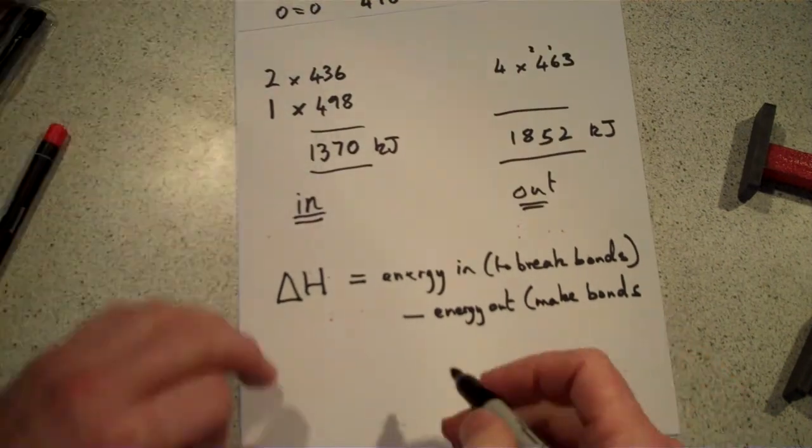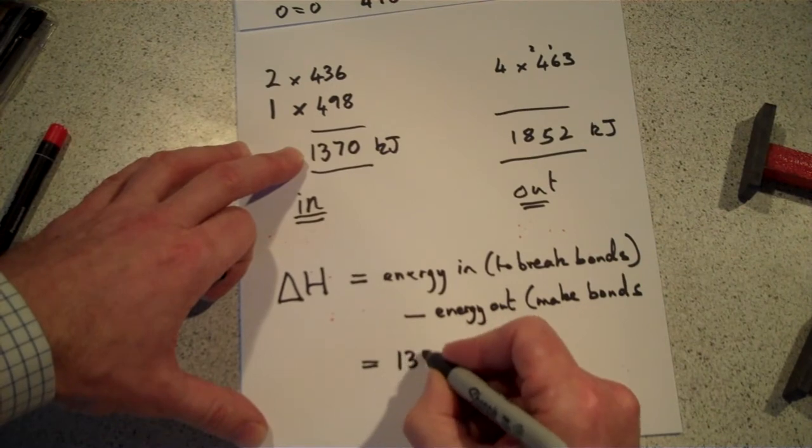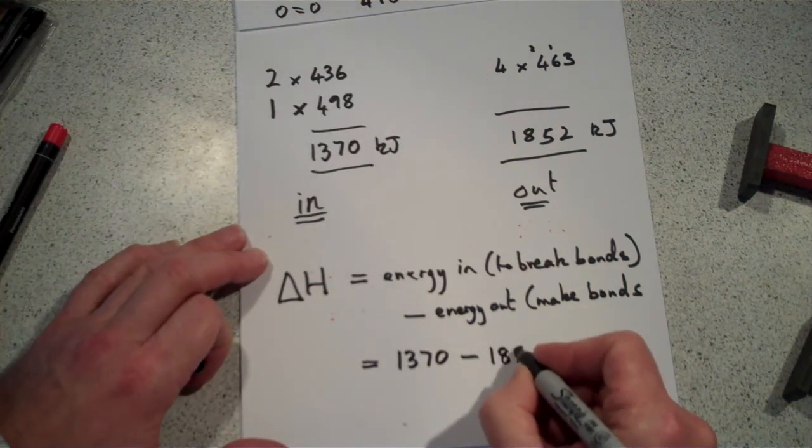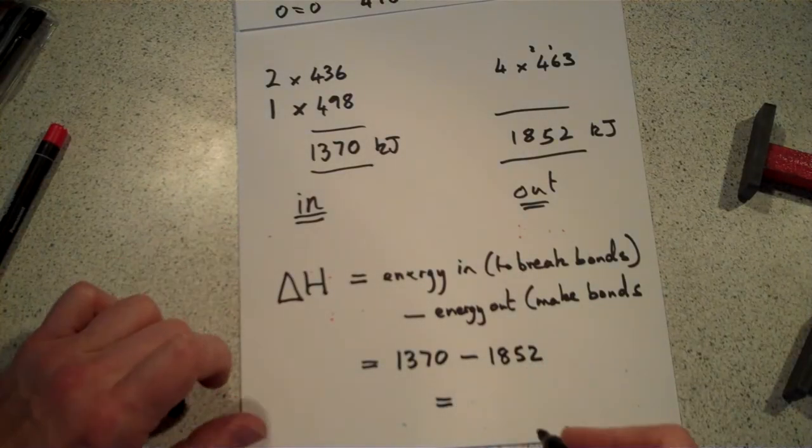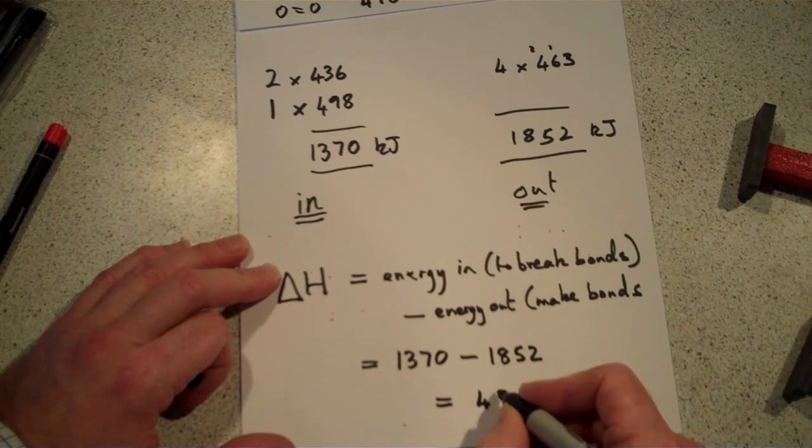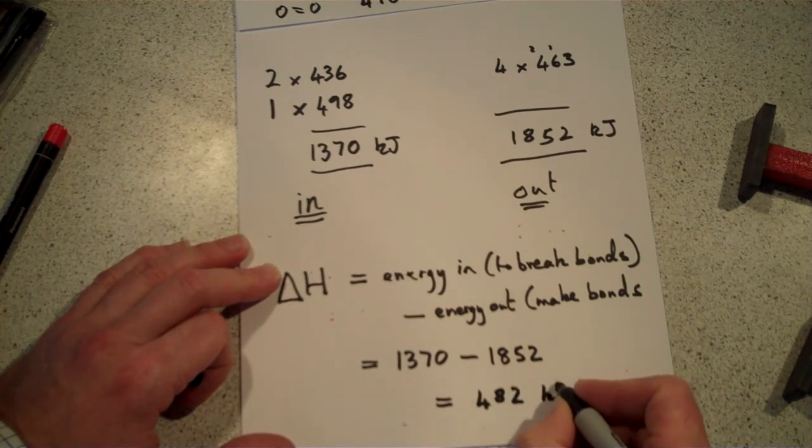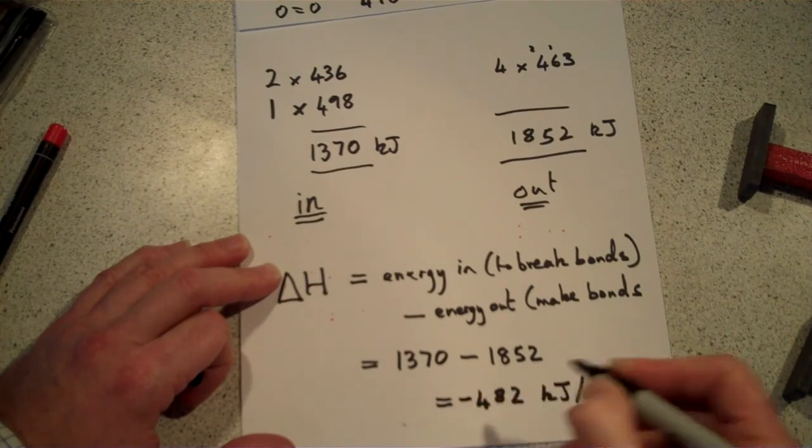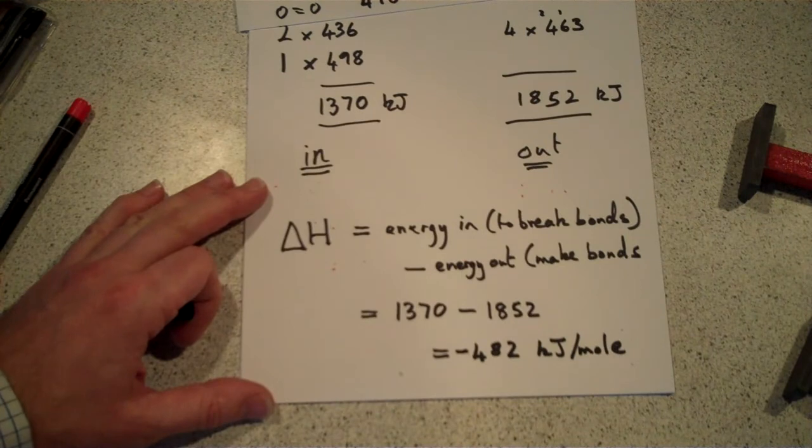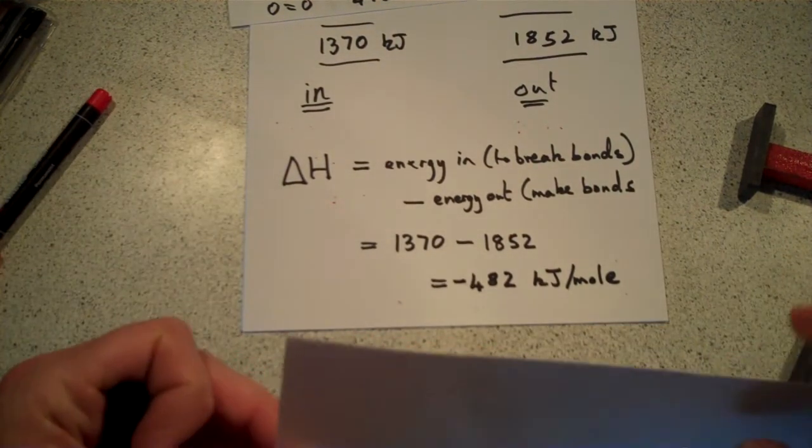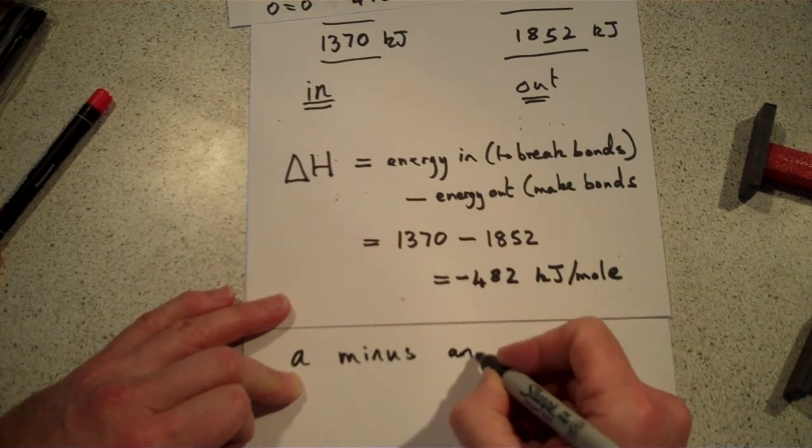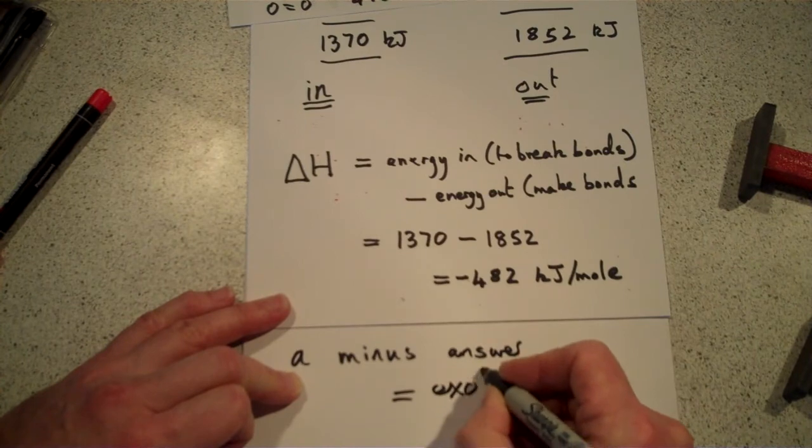So in this example, it's the energy we put in to break our hydrogen and oxygen, 1370. Take away the energy we got out when we made four O-H bonds in water, 1852. You do that calculation, and you get an answer of, ooh, I've got to think about that one now. Looks to me like it's 482 kilojoules per mole. Minus, because we've got more energy out, so that number is bigger than that number. Minus, and if your final answer is minus, that tells you that your reaction is exothermic. A minus answer, or a negative answer, equals exothermic.